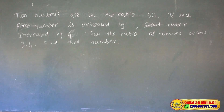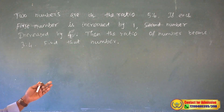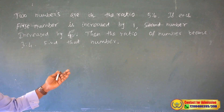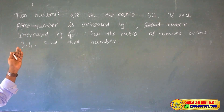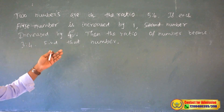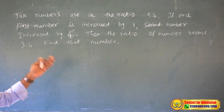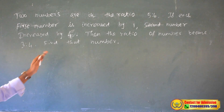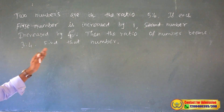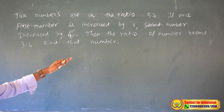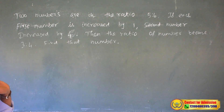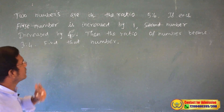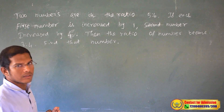Two numbers are in the ratio of 5 to 6. If the first number is increased by 1 and the second number is increased by 4, then the ratio becomes 3 to 4. Now find those numbers.